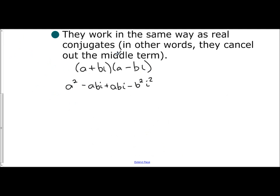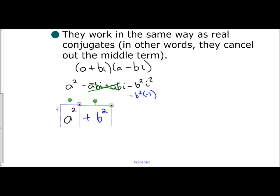And Bi times negative Bi is negative B squared i squared. Look what happens: negative ABi plus ABi — they cancel. The middle terms cancel. You're left with A squared. And i squared is negative 1, so you have negative B squared times negative 1, which is a positive B squared. So if you multiply a complex number by its conjugate, you actually get a real number.